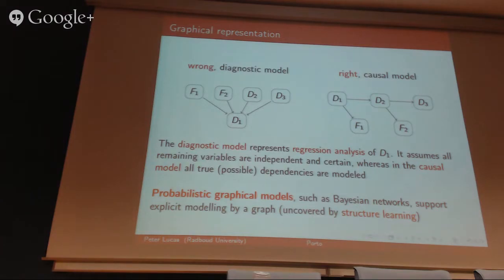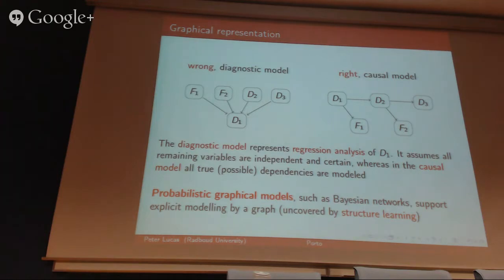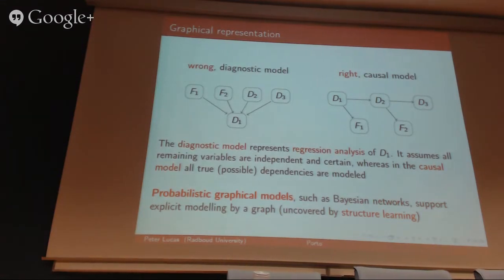From a graphical point of view, the main criticism of the regression approach: what you could do is come up with a graphical version of a regression equation. In this case, we're dealing with a regression equation for the response variable D1 — a disease — with two findings, two symptoms, and two other diseases D2 and D3. What you try to model is a function of D1 given all other variables including their interactions, and you assume D1 is uncertain while all predictors are also uncertain.